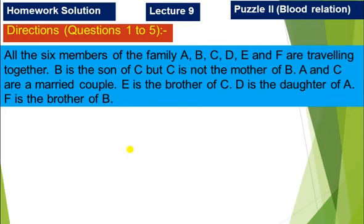All the six members of the family A, B, C, D, E and F are traveling together. B is the son of C, but C is not the mother of B. So what will happen? C will be the father of B. A and C are married couple. E is the brother of C. D is the daughter of A. F is the brother of B.